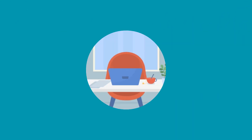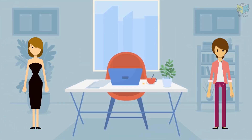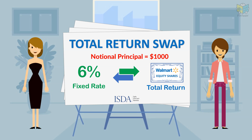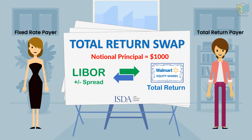Let us see an example to understand the functioning of a Total Return Swap. Suppose Tina and Lily enter into a one-year Total Return Swap, in which Tina will pay a fixed rate of 6% to Lily, and Lily will pay the total return generated by her equity shares of Walmart. The notional principal amount is taken as $1,000. Instead of using a fixed rate payment, we can also use a floating rate payment, such as Libor.